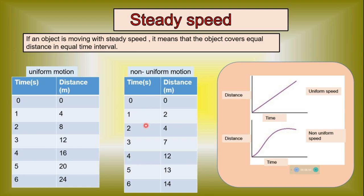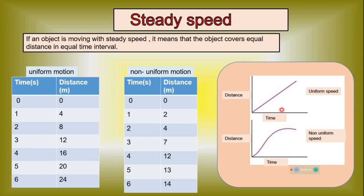For non-uniform motion: at 1 second the distance covered is 2 meters, at 2 seconds it is 4 meters, at 3 seconds it is 7 meters. For every 1 second: between 1 and 2 seconds the distance covered is 2 meters, between 2 and 3 seconds it is 3 meters, and between 3 and 4 seconds it is 5 meters. The distance covered in each interval is different — this is an example of non-uniform motion, and its distance-time graph will be curved.